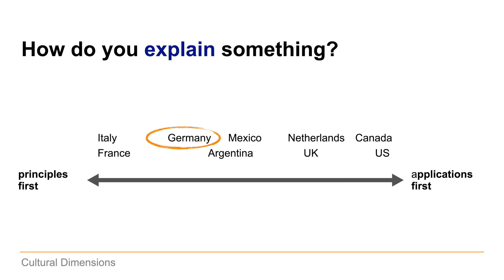How do you explain something — do you explain the principles first or the applications first? If you compare books written in Canada or the US, you'll often notice they start with stories: some person has been in some situation, and then finally you get the academic explanation for why the story went that way. Hardly ever would you see this in a German presentation. The Germans basically start with Adam and Eve and how the earth was created, and later tell you the practical application of the principles they laid out first.